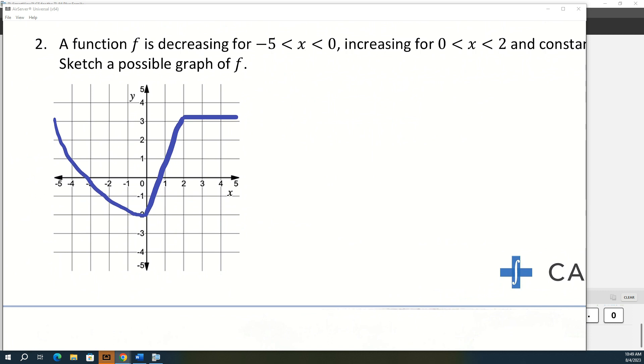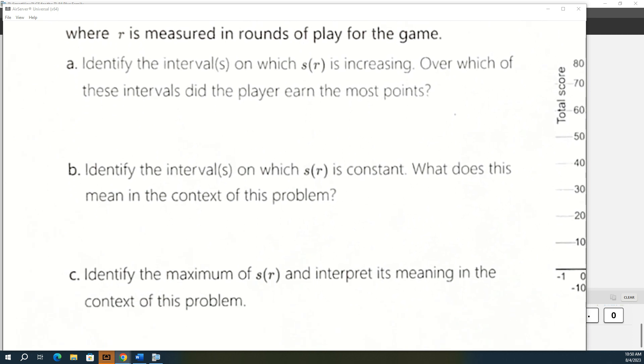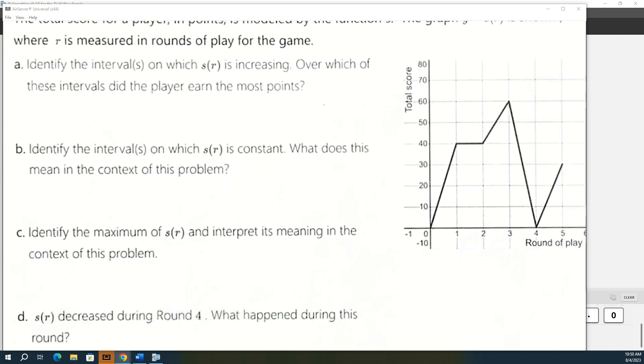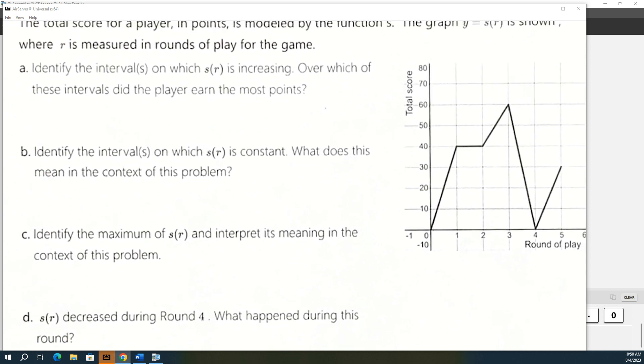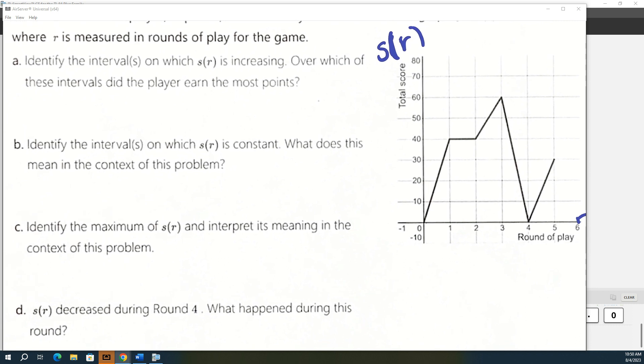The first player to earn 100 points wins. The total score for a player in points is modeled by this function S, where y equals S of R is shown, where R is measured in rounds of play for the game. So A wants us to identify the intervals on which S of R is increasing. I'm going to go ahead and call this S of R. So we have a few. We have three different intervals where the function is increasing. So it's going to describe that in interval notation. So between zero and one, two and three, four and five.